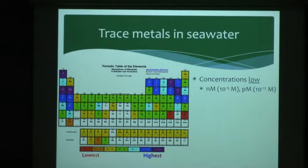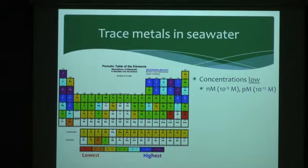The concentrations of trace elements are low in seawater — we call them trace elements for a reason. Their concentrations are on the order of nanomolar to picomolar. Nitrogen and phosphorus are present at micromolar concentrations, so a thousand times more abundant than trace elements. The major constituents of seawater, the cations and anions, are present at millimolar concentrations — a million-fold more abundant than trace elements.